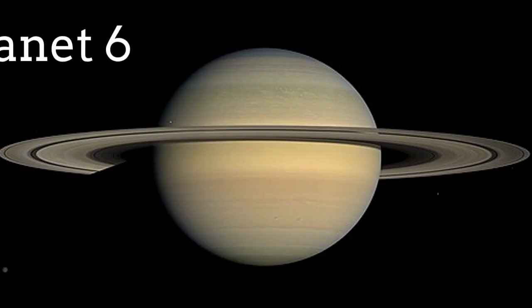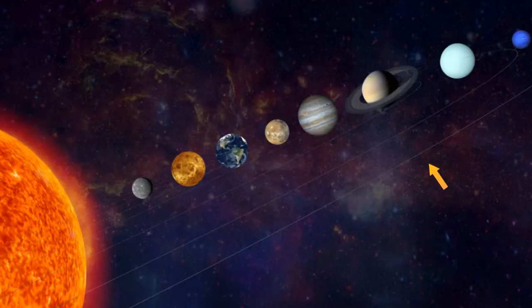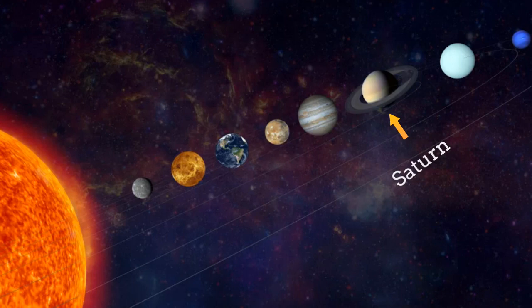Another gas planet, the 6th planet from the Sun is Saturn. Here is the Saturn, 6th planet from the Sun. You can spot it easily due to huge rings. It is in between Jupiter and Uranus.